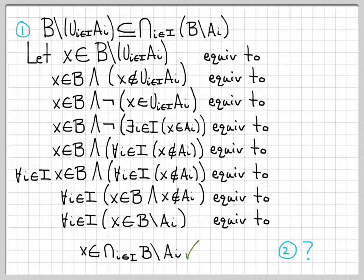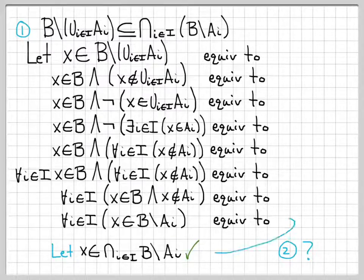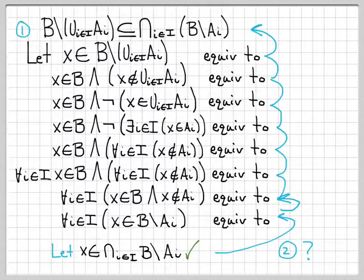For step two, I'm going to go the other way. I need to start with: let X be an element of the intersection, and show it's also an element of B diff the union. I can really just repeat these steps backwards — walk backwards through the set of logical equivalences to get back to where I started. The second part is actually really easy because all the steps were logical equivalences. So we've shown that the first set is a subset of the second, and the second set is a subset of the first. Therefore these sets are equal.